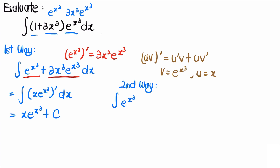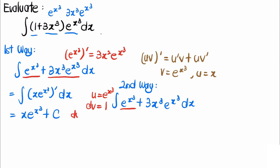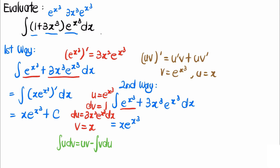For the second way, we directly use integration by parts on the first term. We let u equal eˣ³ and dv equal dx, so du equals 3x²eˣ³ dx and v equals x. The integration by parts formula states that the integral of u dv equals uv minus the integral of v du. Substituting everything in, we get x times eˣ³ minus the integral of x times 3x²eˣ³, which is 3x³eˣ³, dx.